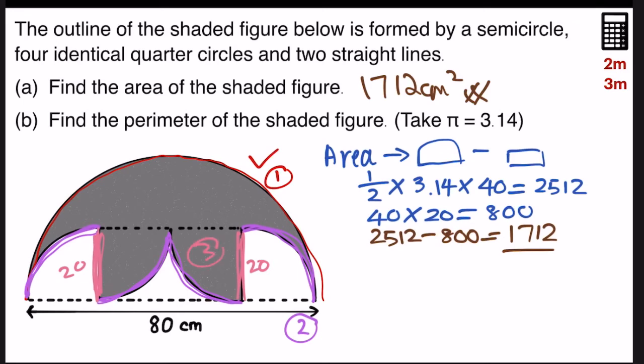So let's jump straight in to find the perimeter. First of all, we're going to find the semicircle. So that's half times pi and the diameter is 80. So I get 125.6.